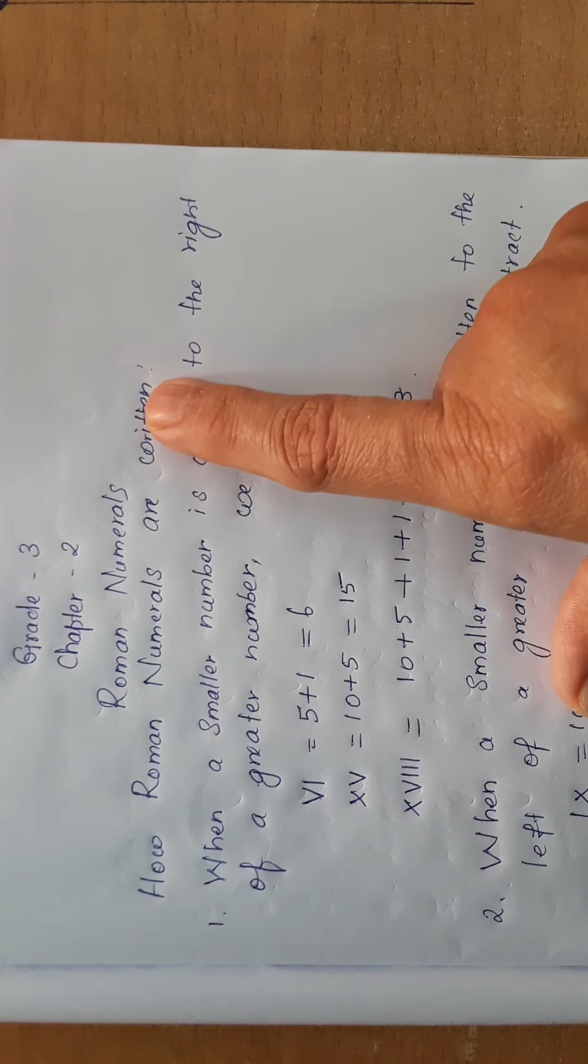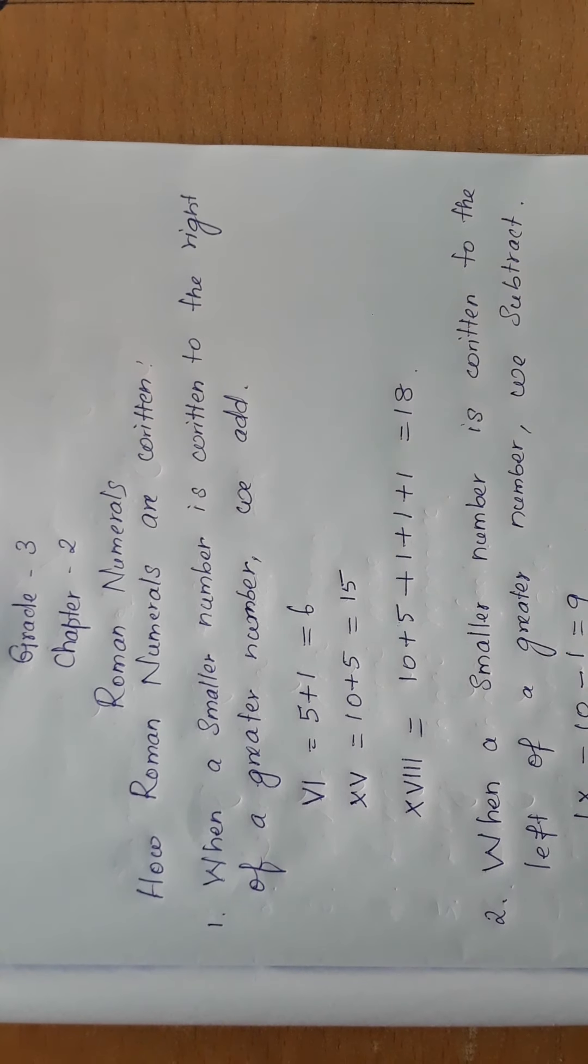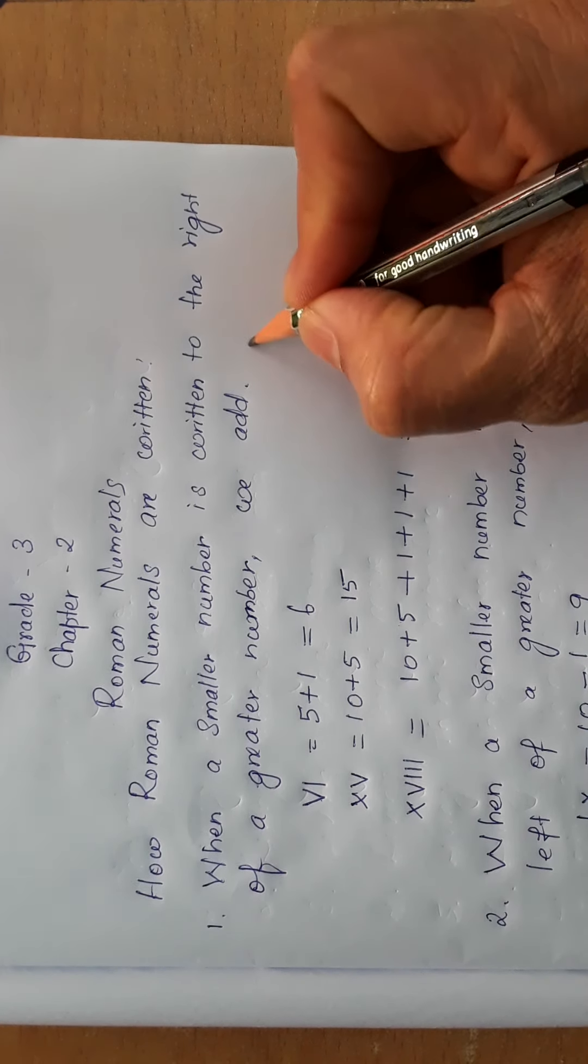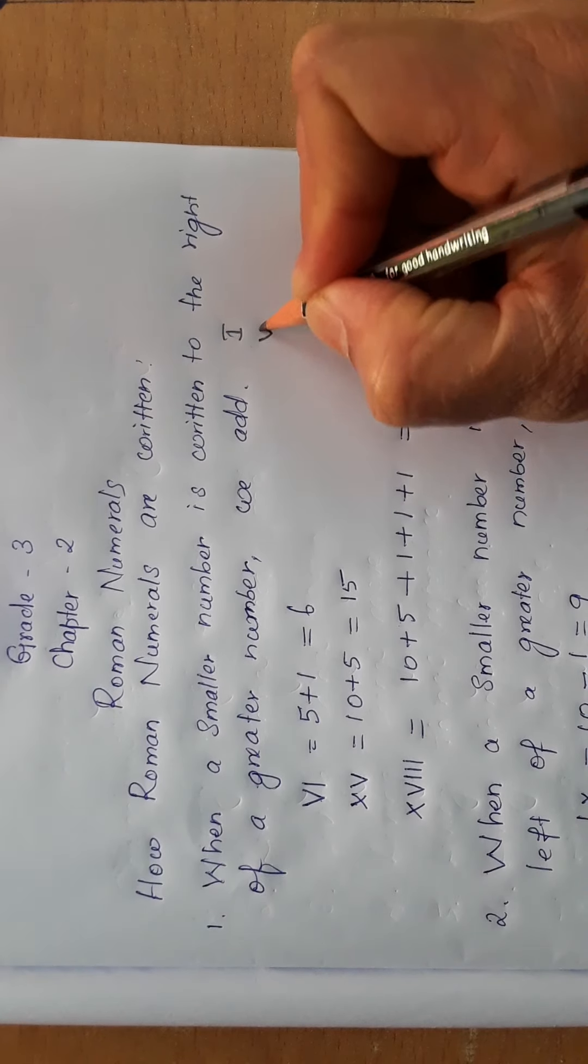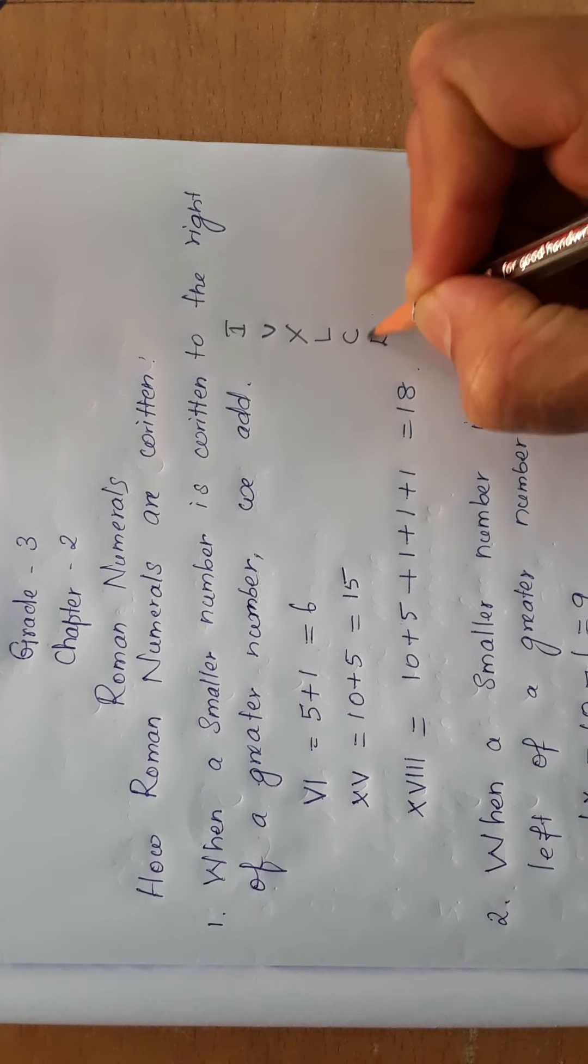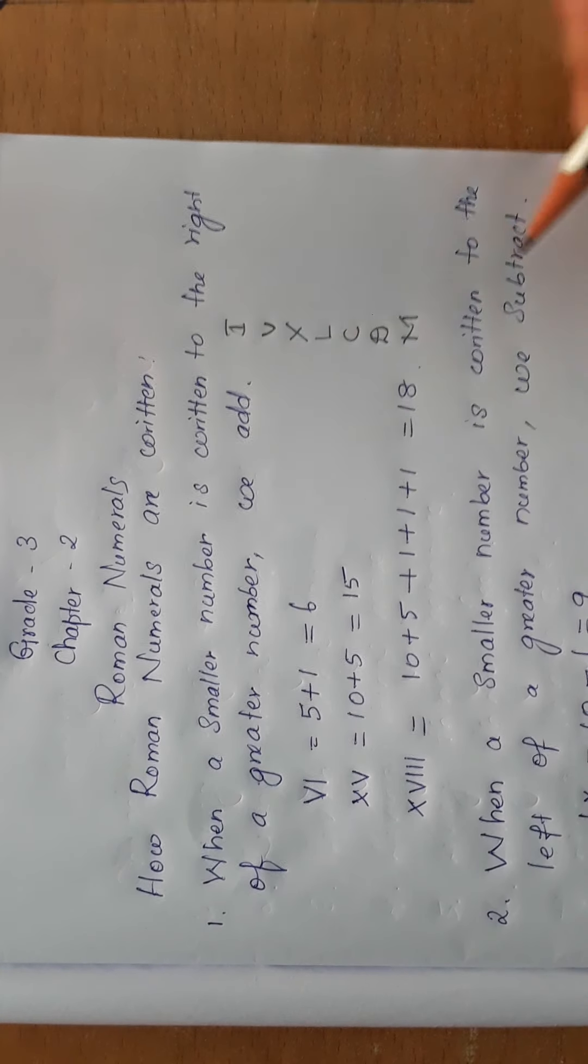Some symbols will come in Roman numerals. What are all they? We will write here: I, V, X, L, C, D, M. These are the symbols.